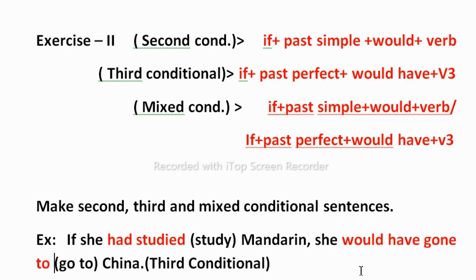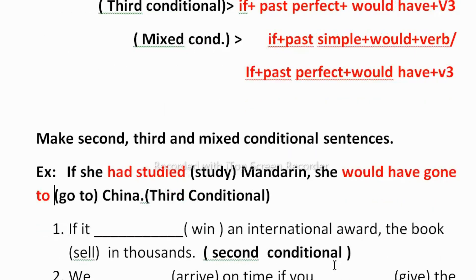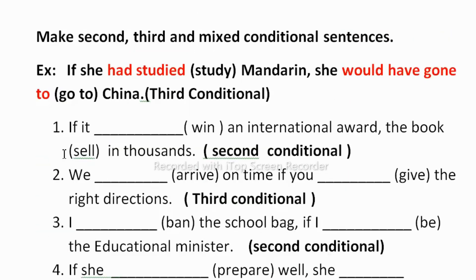You can see I have used the third conditional and filled the blanks accordingly. You have to memorize the structures from zero to mixed conditional, and whatever they ask, substitute the words into the structure. After 'if,' use past perfect — 'had studied Mandarin' — then 'she would have gone to China' because after 'would have' we use V3, so 'go' becomes 'gone.'